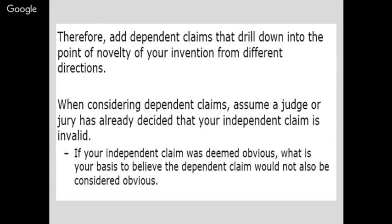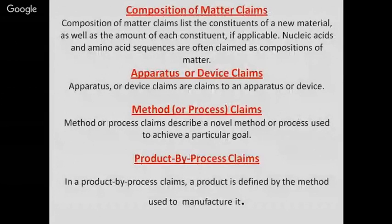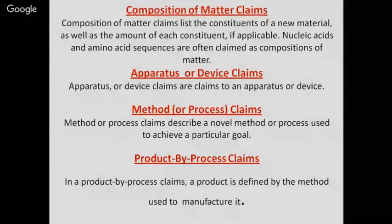When considering dependent claims, assume a judge or jury has already decided your independent claim is invalid — therefore, add dependent claims that drill down into the point of novelty of your invention from different directions. Types of claims include: composition of matter claims, which list constituents of a new material; apparatus or device claims; method or process claims, which describe a novel method or process; and product-by-process claims, where a product is defined by the method used to manufacture it. Late claiming allows introduction of new claims throughout the pendency of the application as long as the subject matter was disclosed in the specification as filed.